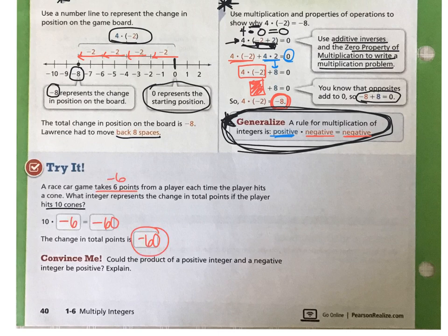Go ahead and check your answer. Did you notice that taking away those 6 points is going to produce a negative 6 integer? So if we take away 6 points on 10 different cones, then that means we will have taken away 60 points altogether. So the change in total points is a negative 60.